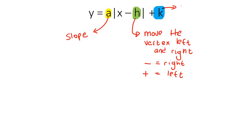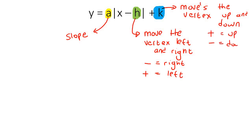Let's make some notes. The vertical shift parameter moves the vertex up and down, and what's nice is it's not weird — positive naturally means up and negative means down. It's the horizontal one that's weird, because you'd think negative means left and positive means right, but it's the other way around. Also, if the number in front is positive, your V faces upwards; if that number is negative, your V faces downwards.